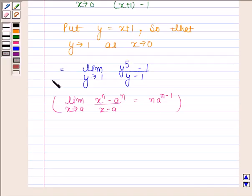So, by using this theorem, limit of y^5 minus 1 upon y minus 1 as y tends to 1 is 5 times 1 to the power 5 minus 1. And this is equal to 5. Hence, our required limit is 5. This completes the session. Thank you.